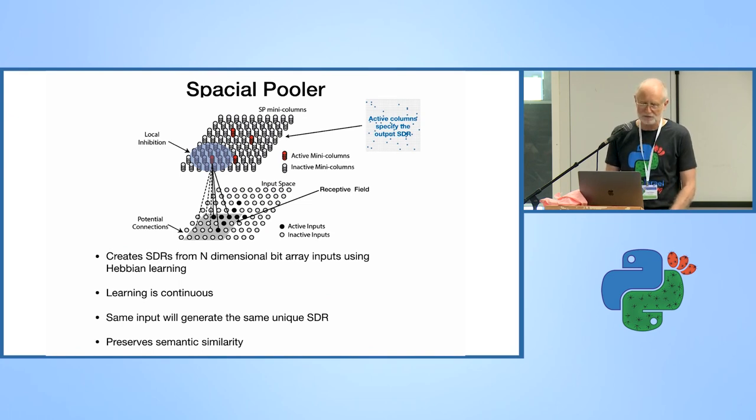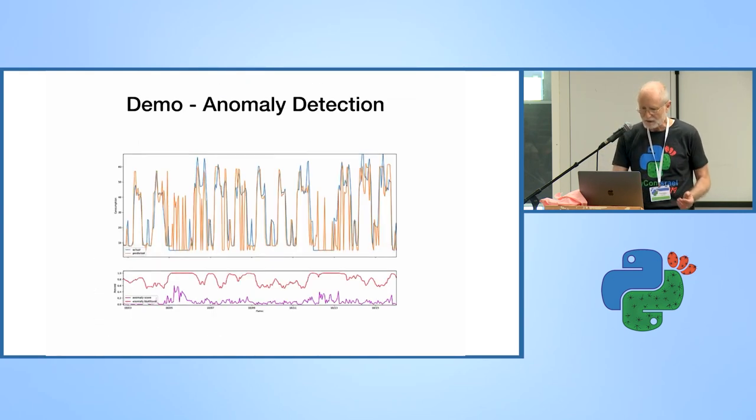The spatial pooler is for converting input data into SDRs. I'm not going to go into it, but basically you can feed it a dimensional bit array and using Hebbian learning, it'll output an SDR. The learning is continuous and it has to make sure that the same input will always generate the same SDR, because your SDR is your semantic information.